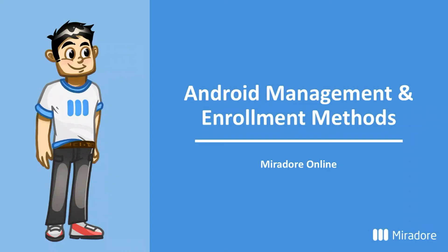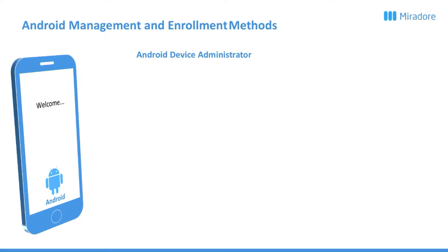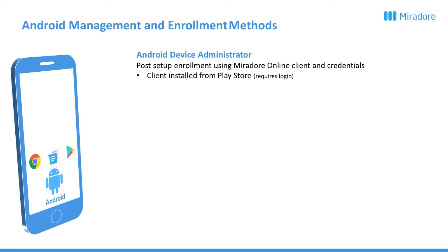Welcome to this video on Android Management and Enrollment Methods. First up is Android Device Administrator. This is done through a post-setup enrollment using the Mirador Online Client and credentials, which means you start up the device, go through the entire setup wizard, end up on the home screen, and then use the Google Play Store to download the Mirador Online Client and enroll your device.